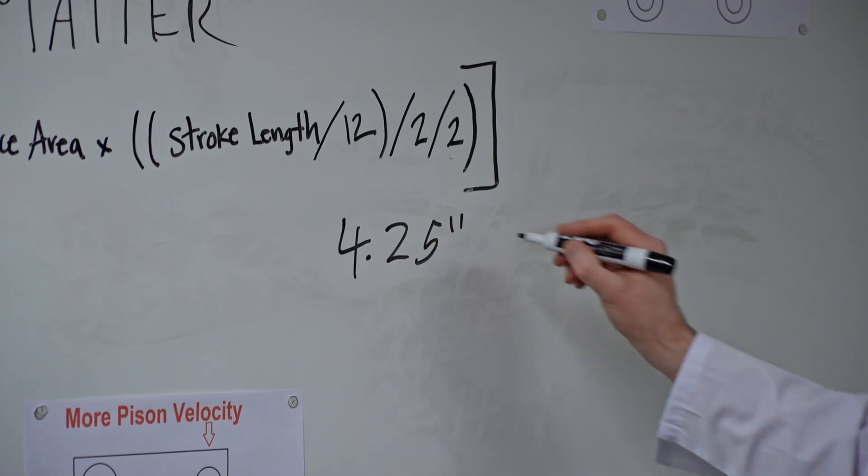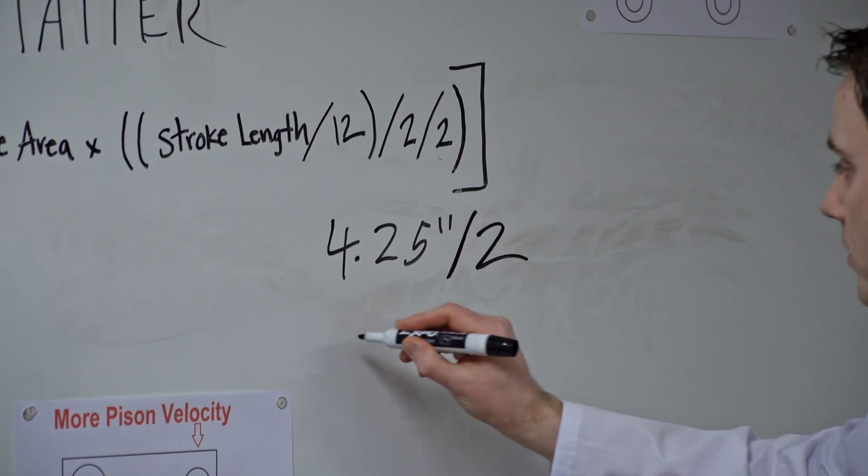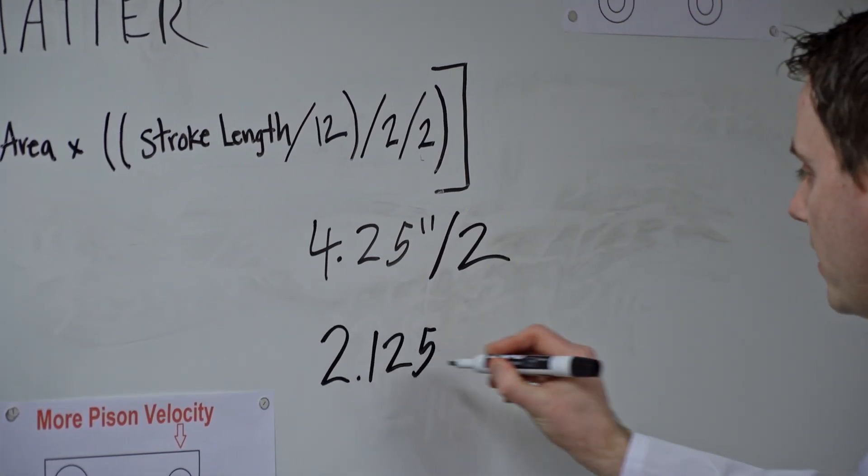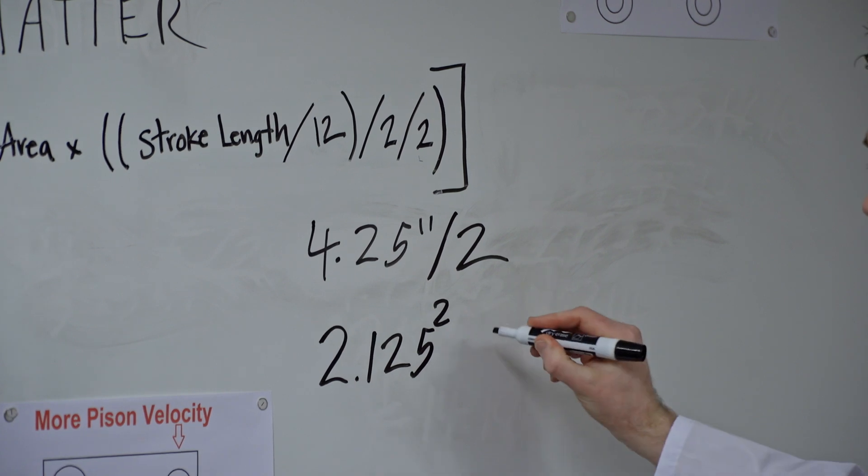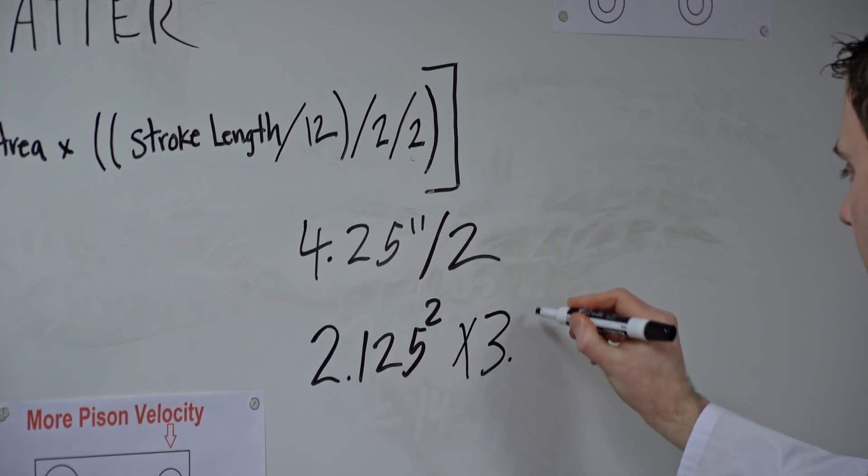So to get the surface area, we go 4 and a quarter, we divide that by 2 to get 2 and an eighth squared times pi, 3.14, which equals 14.18 square inches.